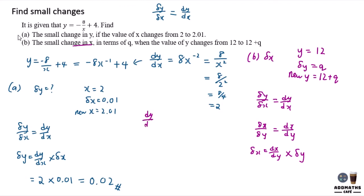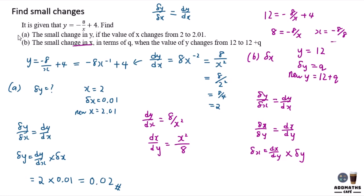To find dx/dy: since dy/dx is 8 over x squared, dx/dy will be x squared over 8. You also need to find x when y equals 12. Substituting into the equation: 12 equals negative 8 over x plus 4, which gives 8 equals negative 8 over x, so x equals negative 8 over 8, which is negative 1.